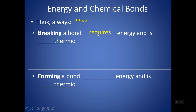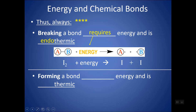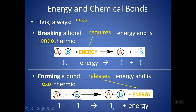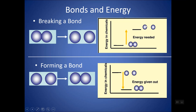Breaking a bond always requires energy — it's always endothermic. If you have two atoms bonded together, you need to input energy to break the bond. Forming a bond releases energy; it's exothermic. The energy of separated atoms is greater than the energy of atoms bonded together. Things like O2, N2, sodium chloride, and even pure sodium with its metallic bonding form bonds because bonding gives a more stable, lower energy state.